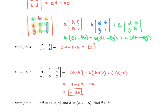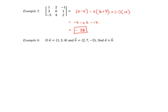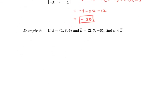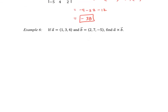Let's do example 6, our very first cross product between vectors. We have A cross B. Setting it up with our matrix: unit vectors i, j, and k in the first row; the components of A — 1, 3, and 4 — in the second row; and 2, 7, and negative 5 in the third row.